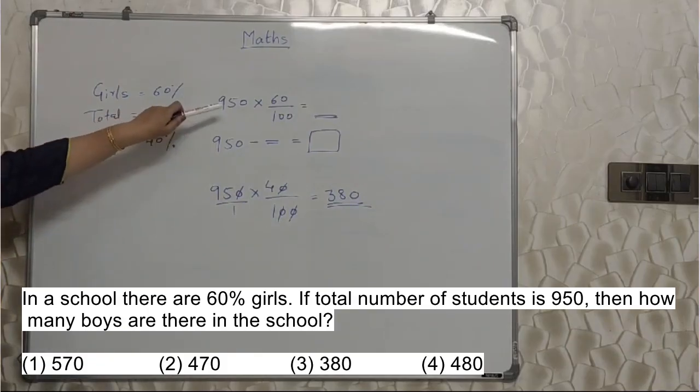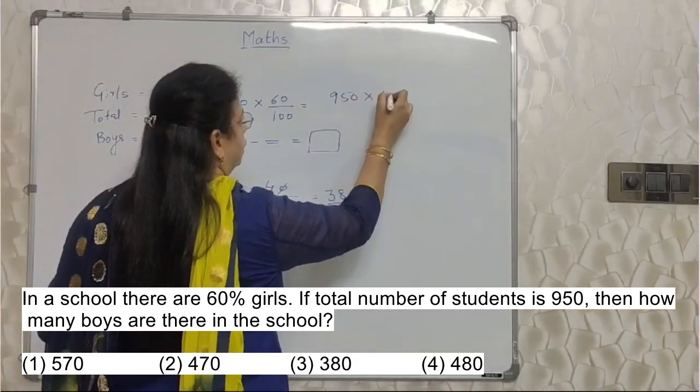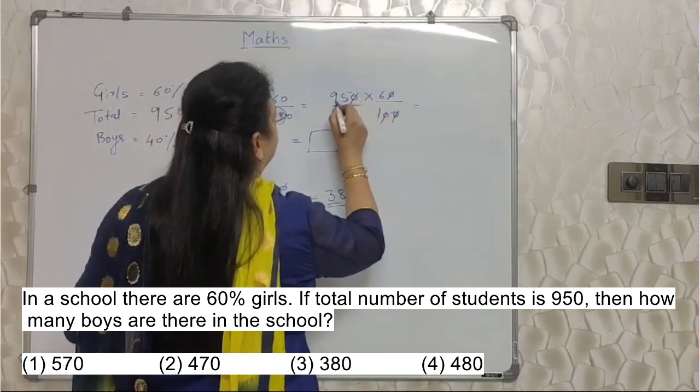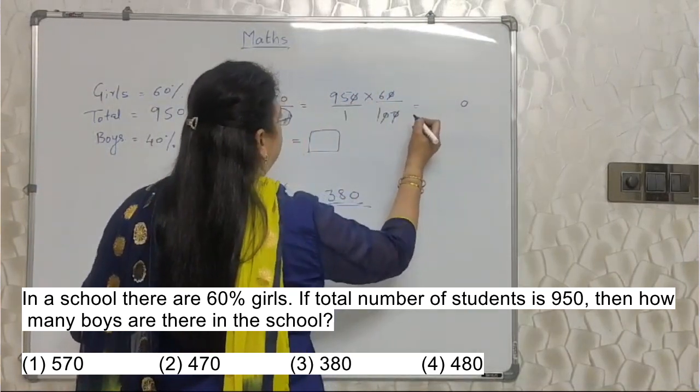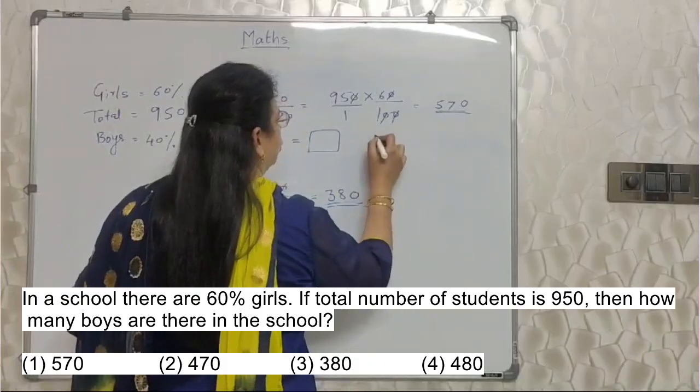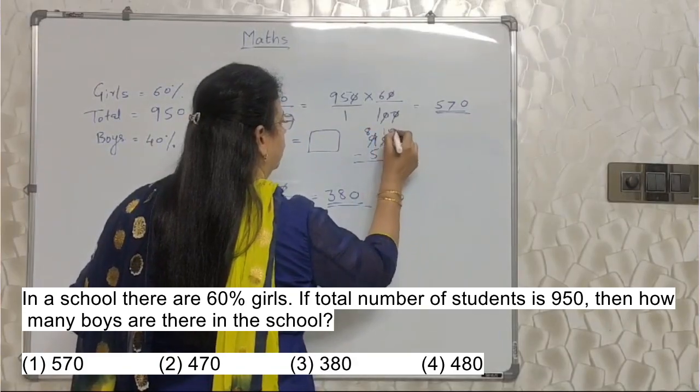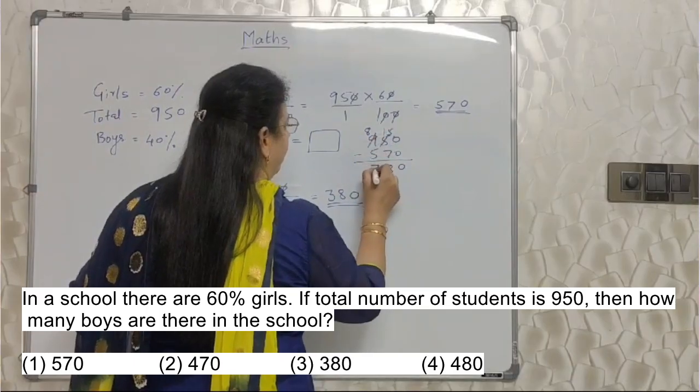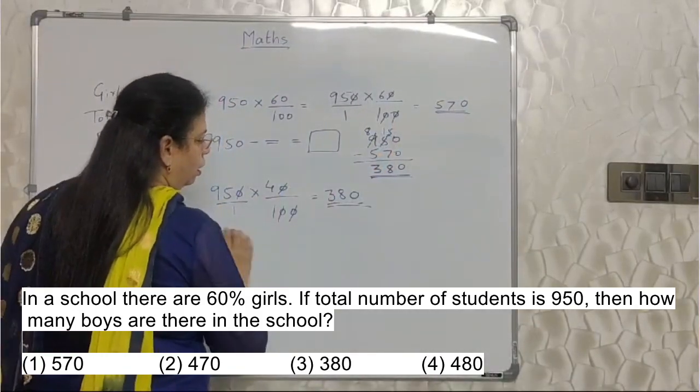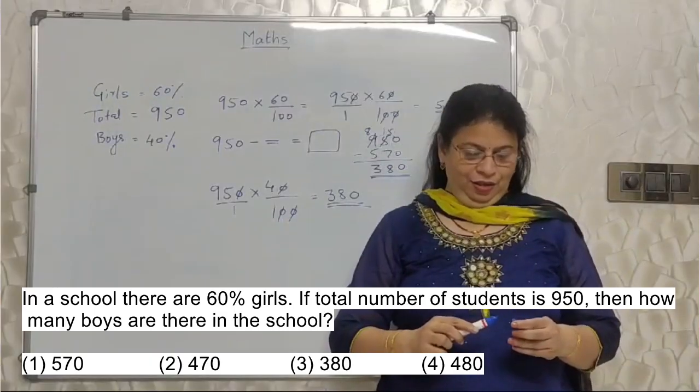See if you do this, 950 into 60%, the answer won't be wrong. See we will do it here. 60%, same here 1. Zeros cancel. Now 95 into 6. 6 fours are 30. 9 sixes are 54 plus 3 is 57. These many girls are there. So 950 minus 570. So again you have to do subtraction. The answer won't change. But isn't this a longer procedure than this? In one step we have arrived at the answer. So why to do 3-4 steps? We have to save time. Correct?